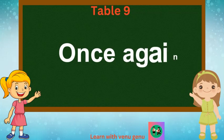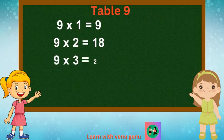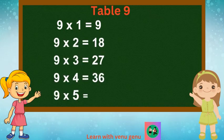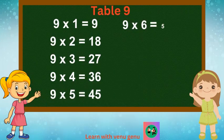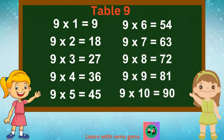Once again: 9 1s are 9, 9 2s are 18, 9 3s are 27, 9 4s are 36, 9 5s are 45, 9 6s are 54, 9 7s are 63. 9 8s are 72, 9 9s are 81, 9 10s are 90.